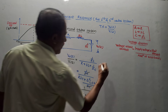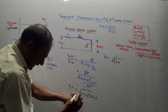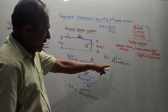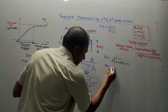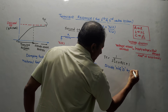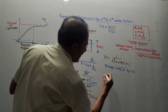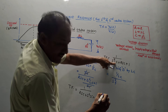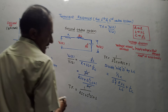Rearranging with the highest power first: transfer function equals 1 over (S²LC + S·RC + 1). Dividing numerator and denominator by LC: the transfer function becomes (1/LC) divided by (S² + S·R/L + 1/LC). This is the transfer function equation for the second order system.